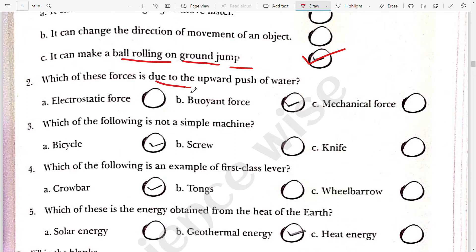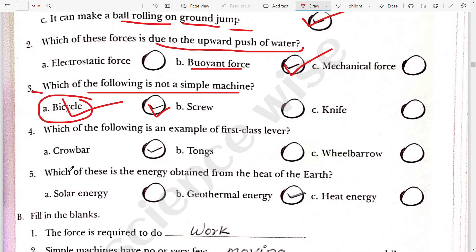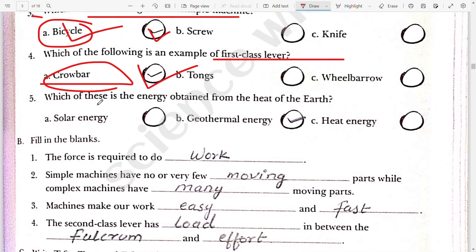Second, which of this force is due to the upward push of water? Buoyant force. Which of the following is not a simple machine? Screw, knife or bicycle? So answer is bicycle. Correct answer is bicycle. Which of the following is an example of first class lever? Crowbar is the example of first class lever. Which of the following is the energy obtained from the heat of the earth? Geothermal. I have explained in the explanation, geothermal means heat. So geothermal energy.